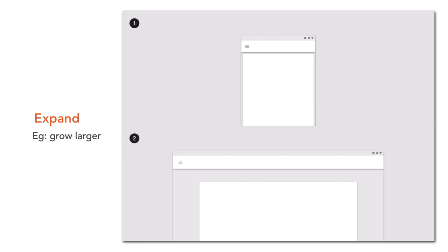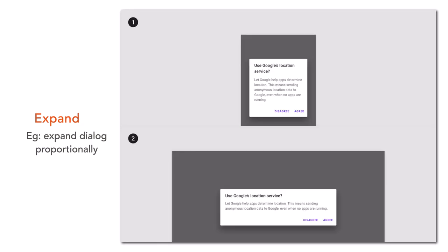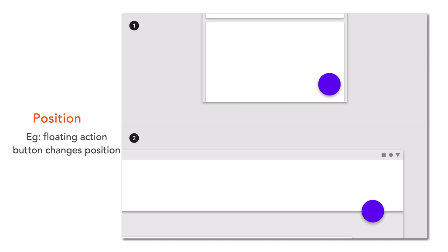Expand is another simple pattern where a UI component is expanded on a large screen to fill a larger space. For example, a card item on a small screen is expanded when larger space becomes available on a large layout. Another example of the expand pattern is a dialog, where the dialog is expanded proportionally from a smaller size to a larger size.